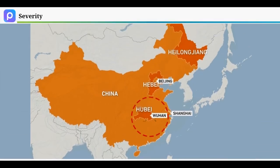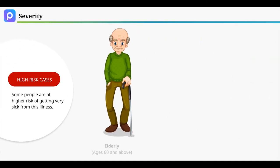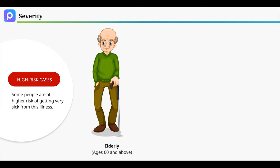Early information out of China, where the outbreak first started, shows that some people are at higher risk of getting very sick from this illness. They include older adults, those who are within the ages of 60 and above.